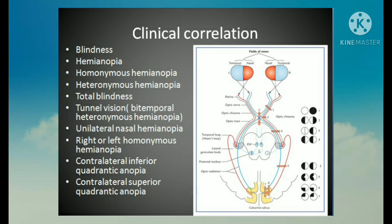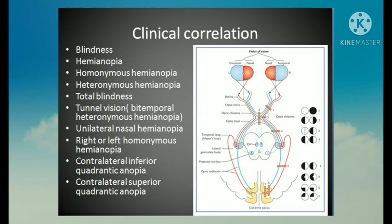Complete destruction of the optic tract or geniculo-calcarine tract on one side results in blindness of the opposite half of the visual field — this is called right or left homonymous hemianopia. A lesion involving the visual cortex produces blindness in the opposite half of the visual field, called homonymous hemianopia with sparing of macular vision. Destruction of the upper tip of the calcarine sulcus on one side produces visual loss in the lower quadrant of the opposite visual field, called contralateral inferior quadrantanopia. Destruction of the lower tip produces visual loss in the superior quadrant, called contralateral superior quadrantanopia.